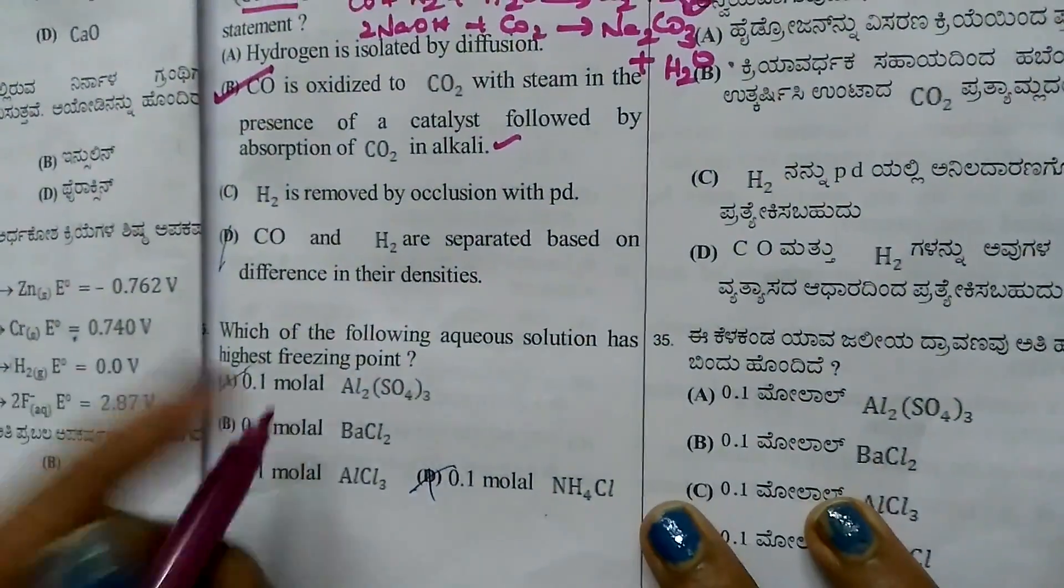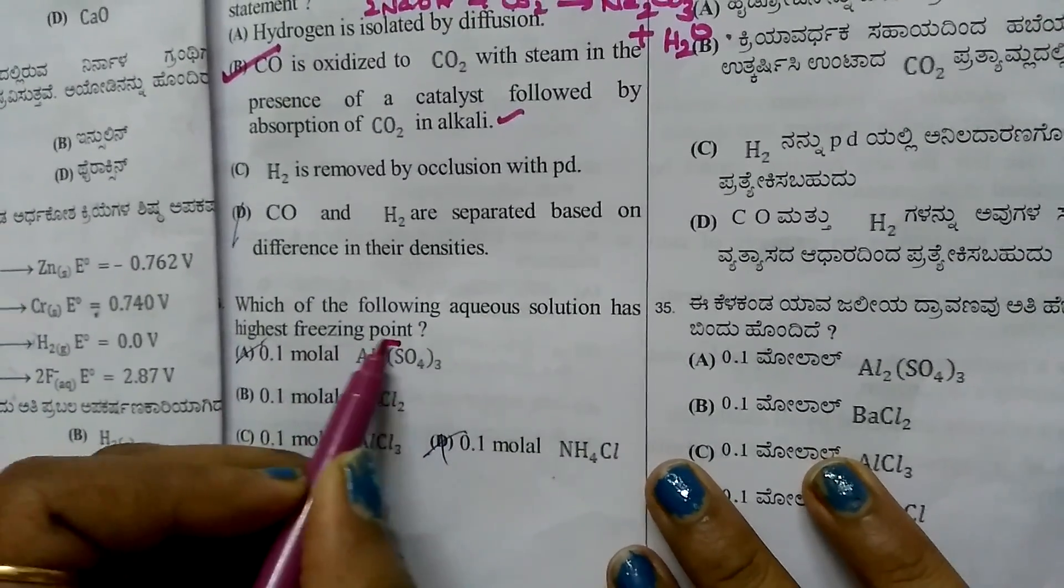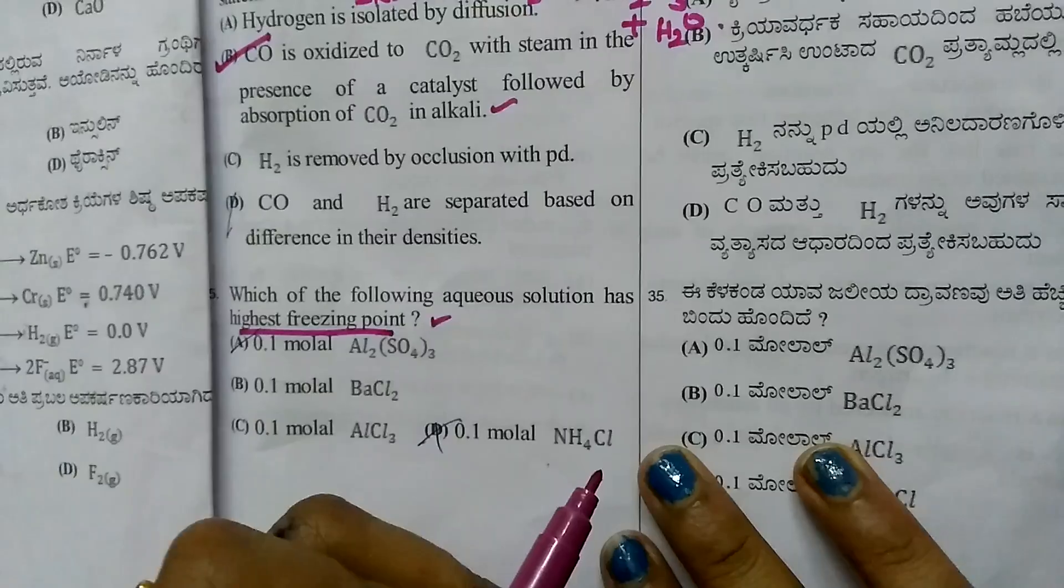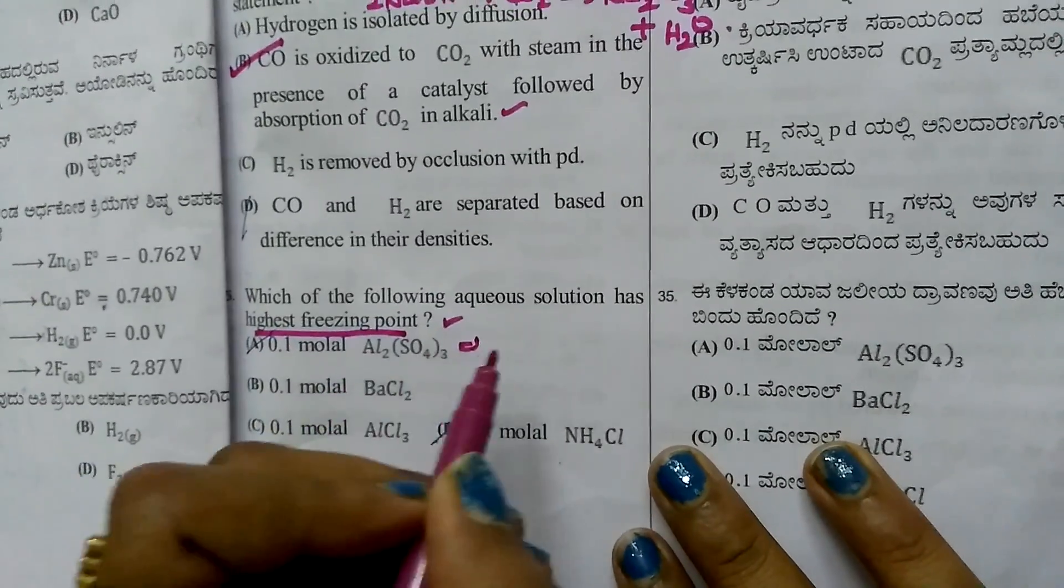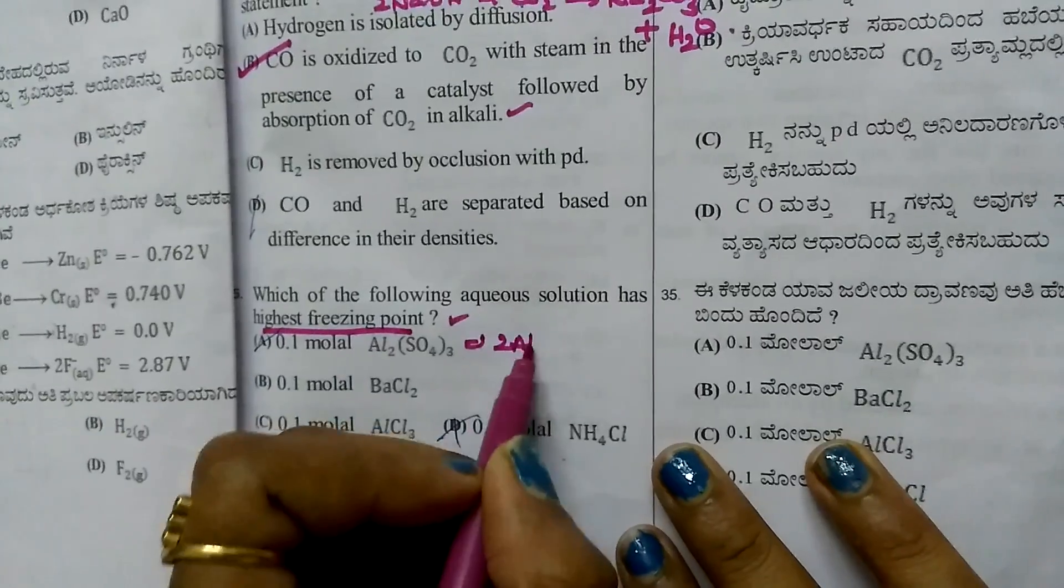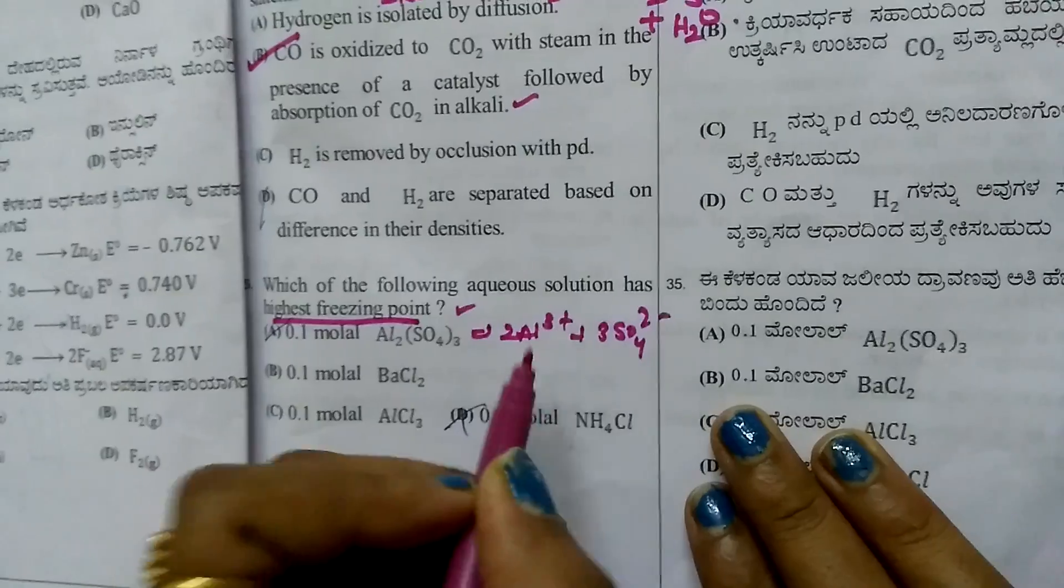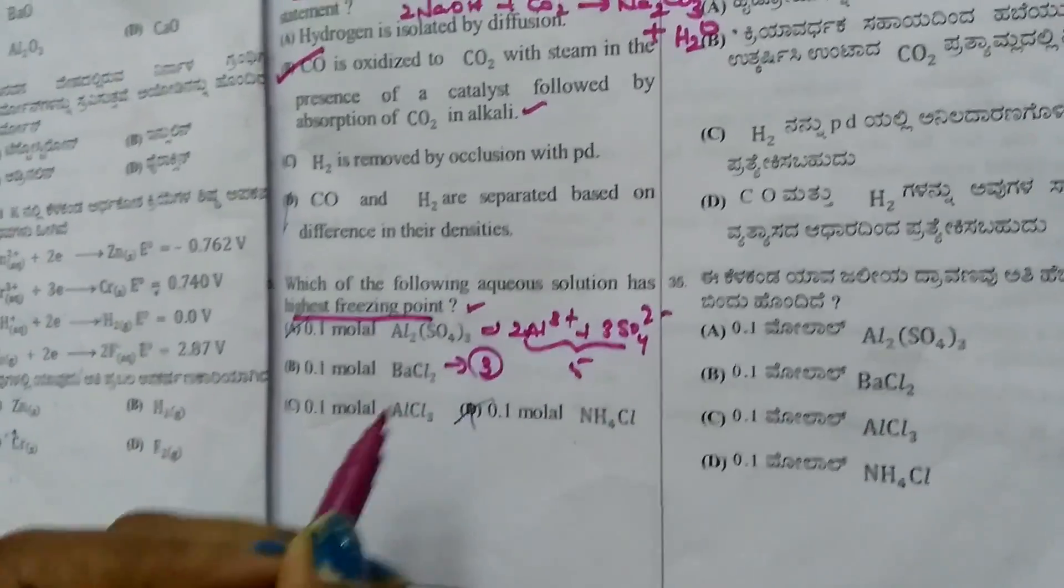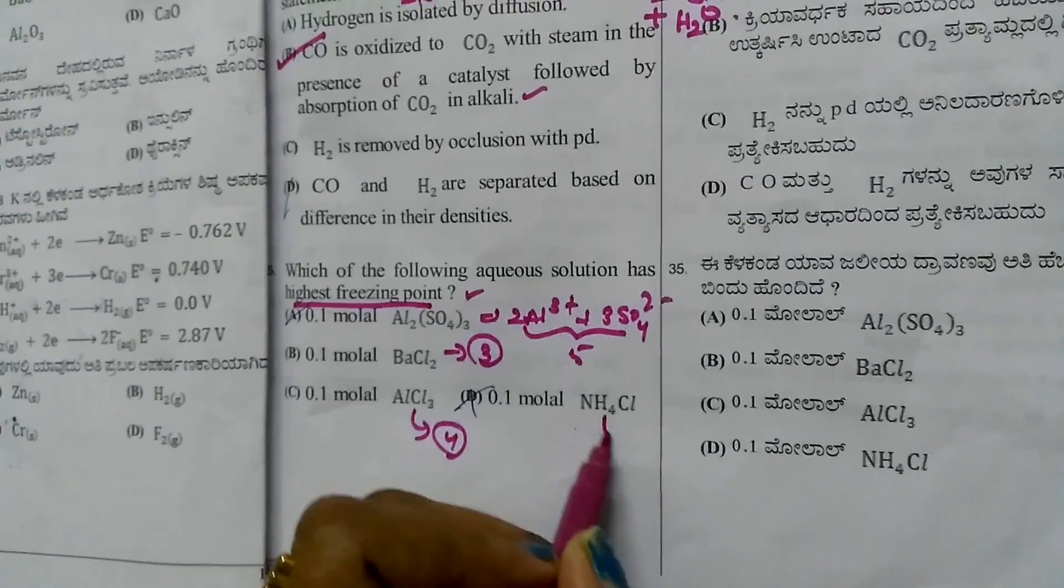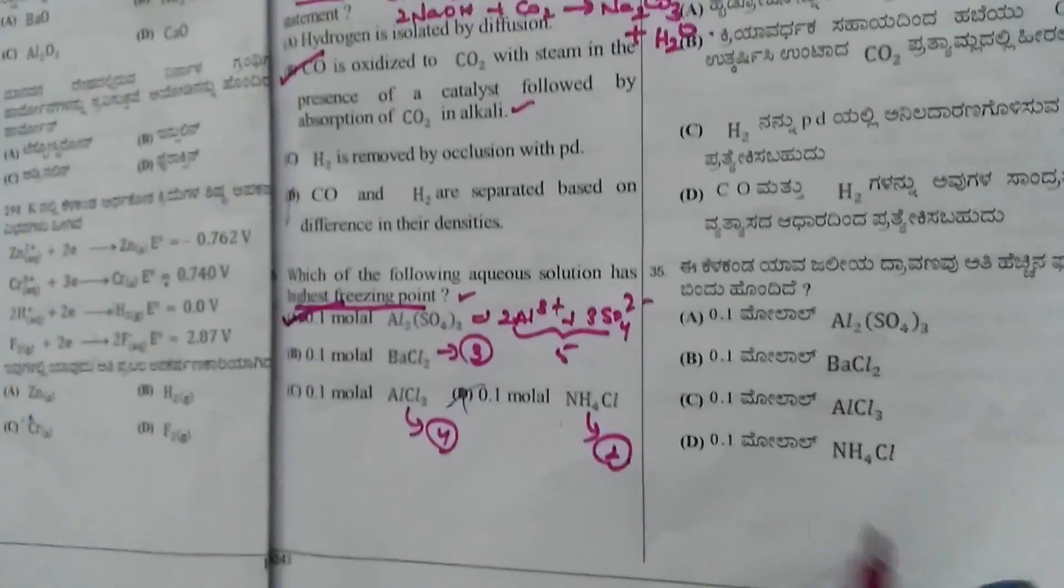Question 35: Which aqueous solution has highest freezing point? More ions means higher freezing point depression. Al2(SO4)3 dissociates into 2Al3+ and 3SO42-, giving 5 ions. Others give 3, 4, and 2 ions. More ions in the first case means more freezing point depression.